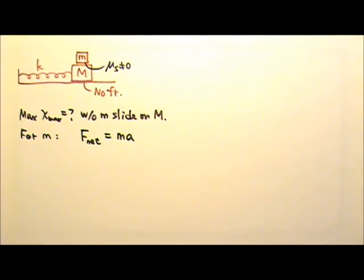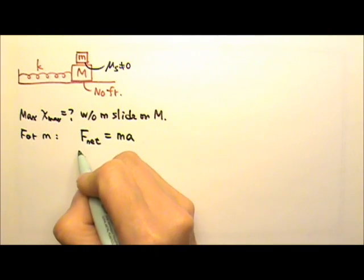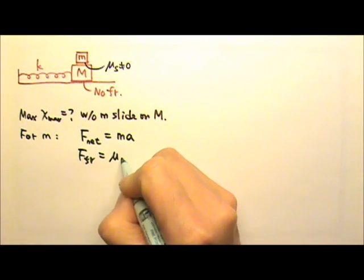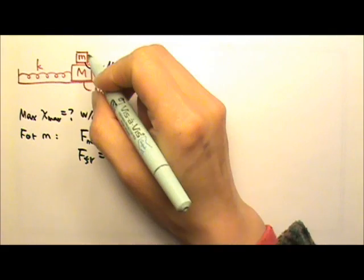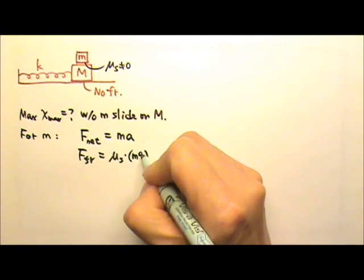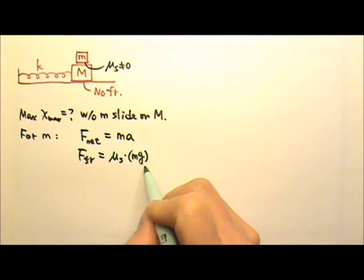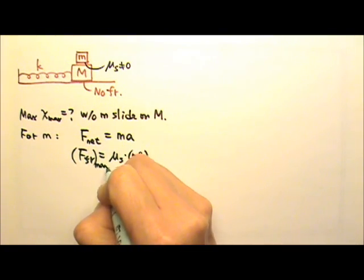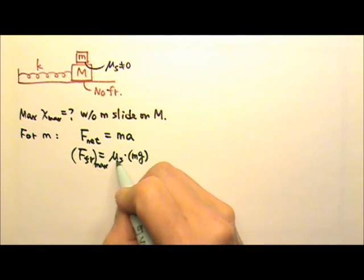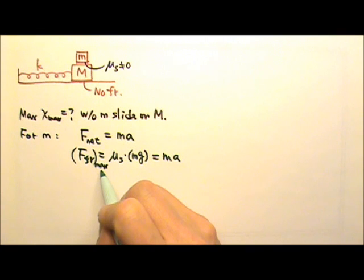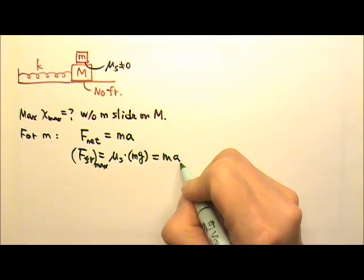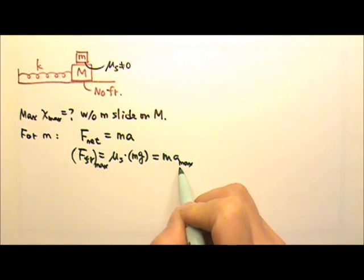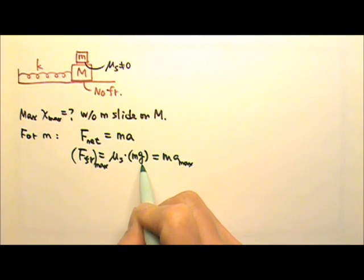Because the condition is about little m having enough frictional force to keep it from sliding, we write the force equation for little m. During oscillation, the net force on little m is the friction. Since we are given mu-s, we can find the friction using mu-s times the normal force, which in this case is little m·g. This gives us the maximum possible friction, and setting it equal to m·a gives us the maximum possible acceleration, which is mu-s times g.